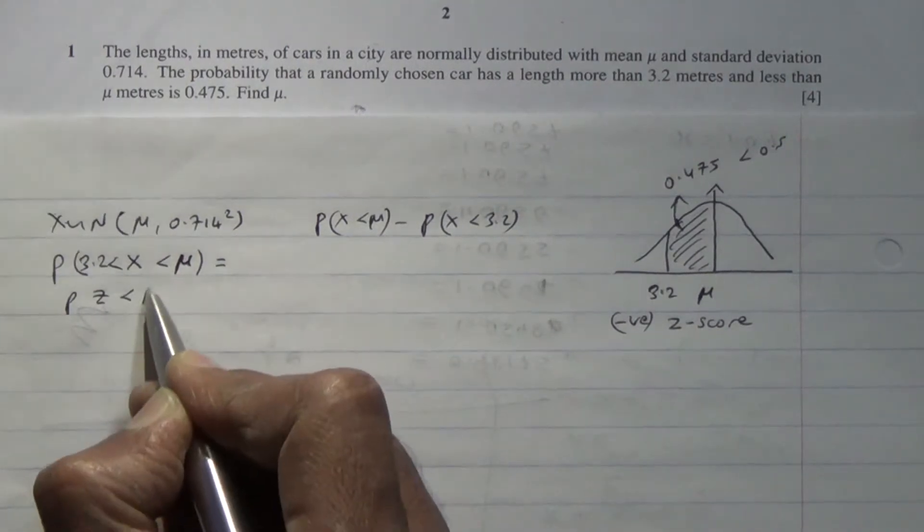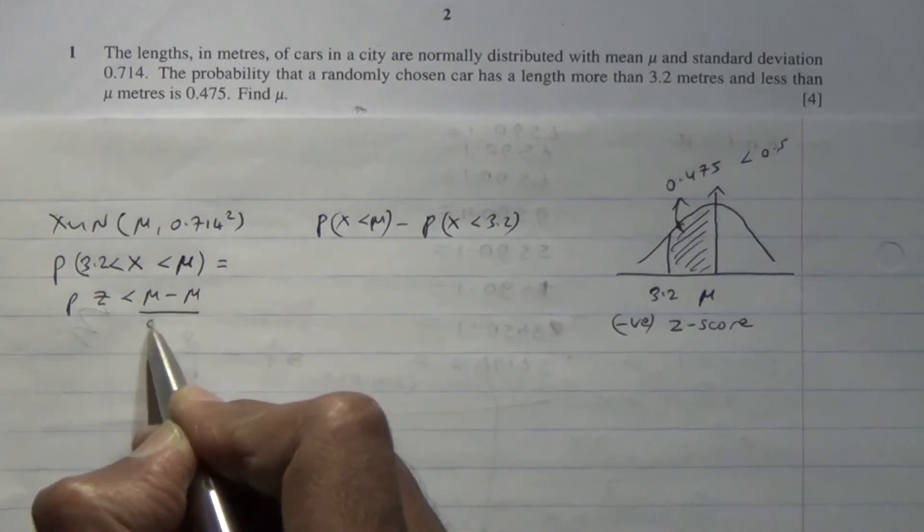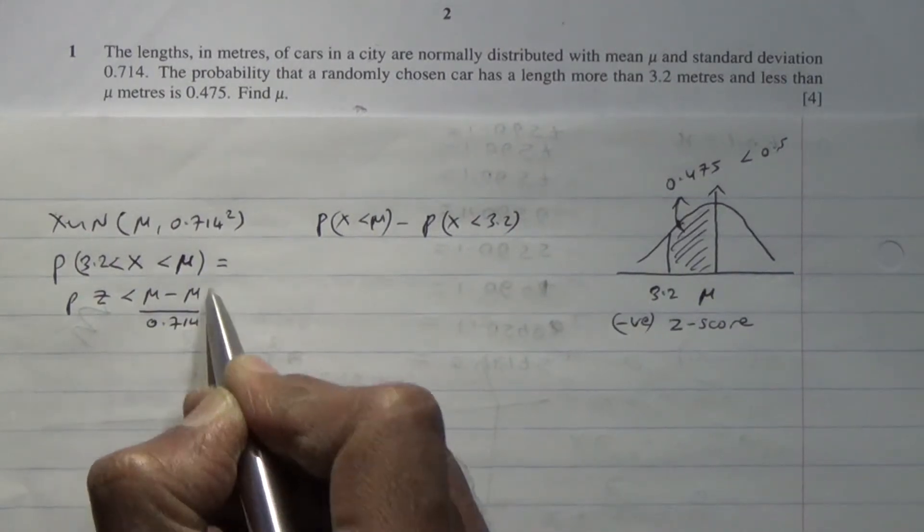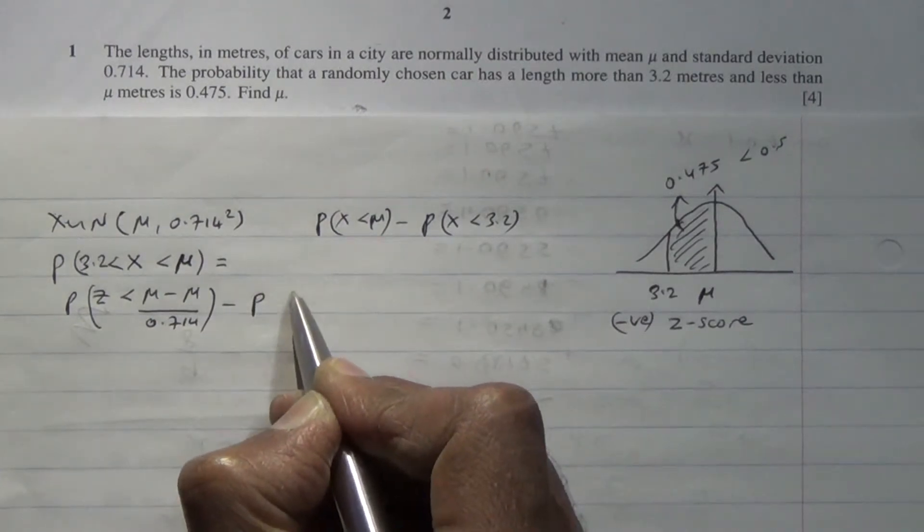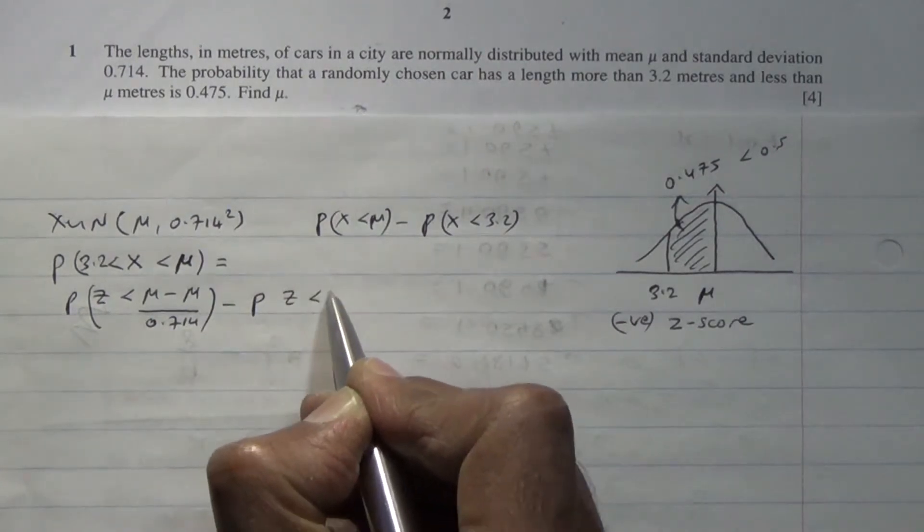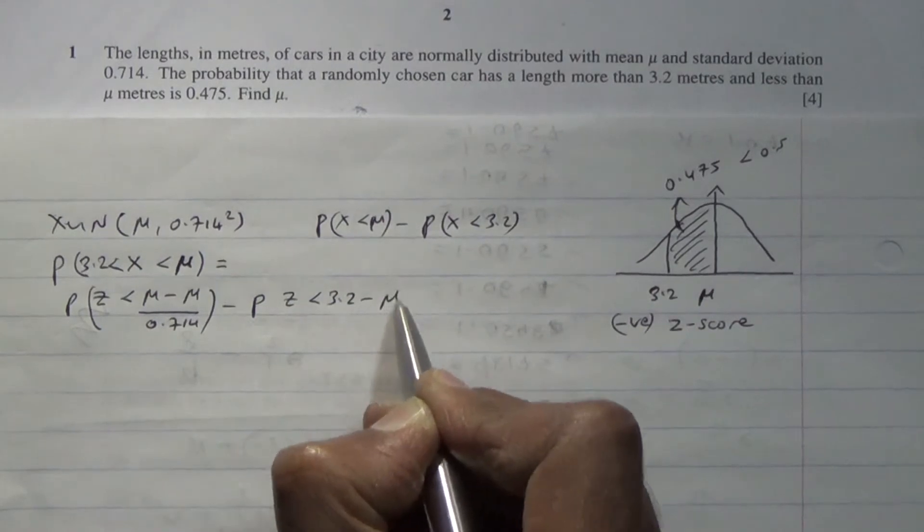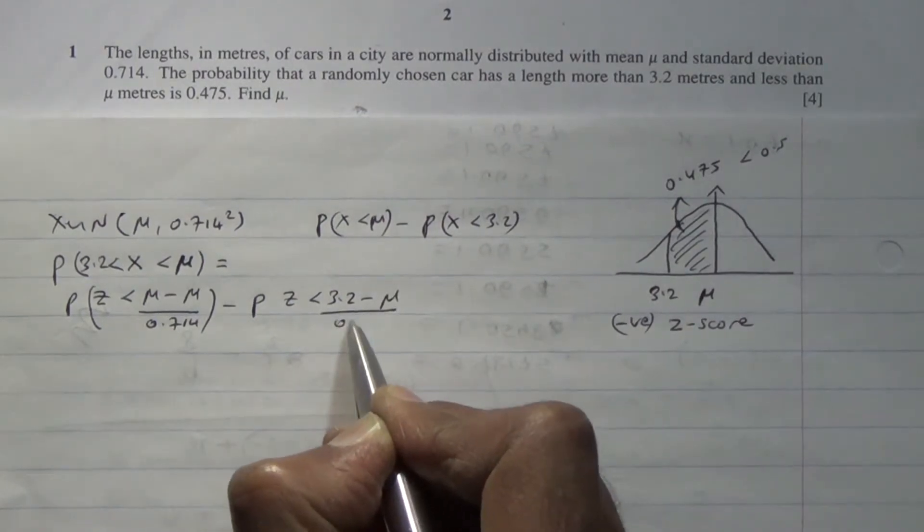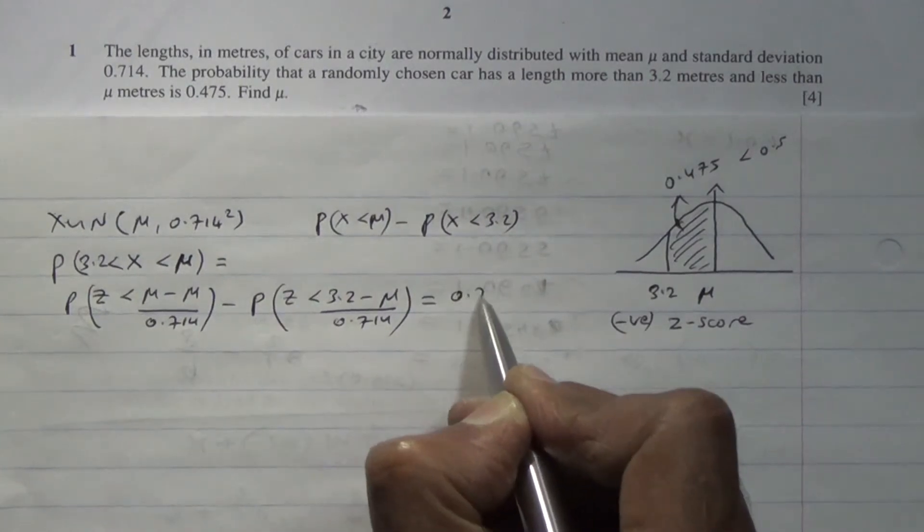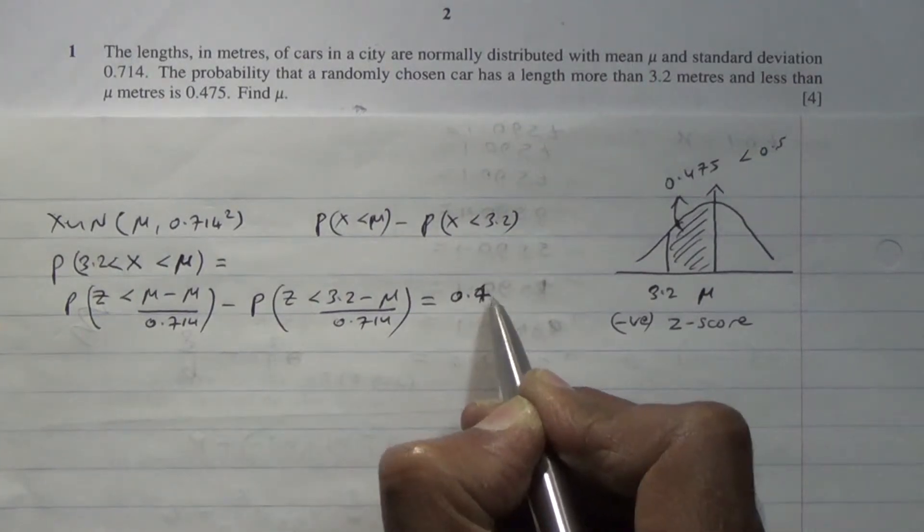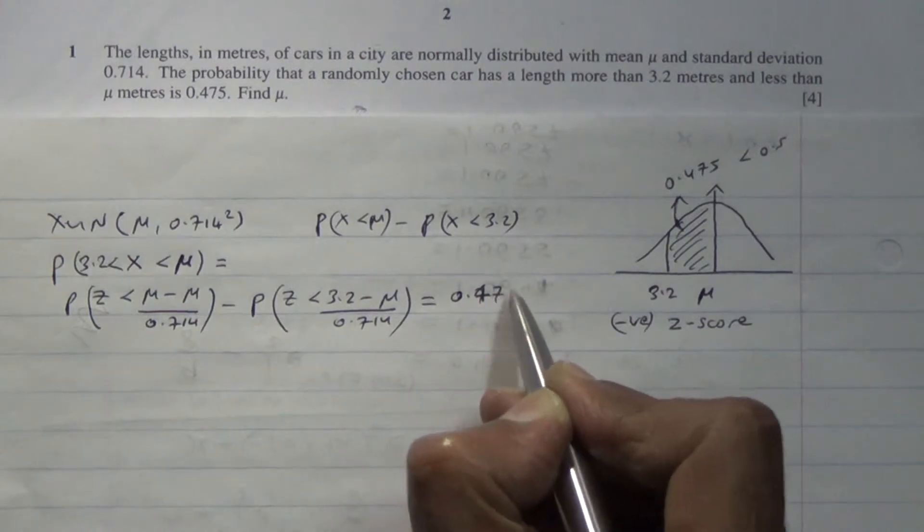Probability of z being less than mu minus the mean mu over the standard deviation 0.714, all of that minus the probability of z being less than 3.2 minus the mean mu over the standard deviation again. All of that is going to give us this area 0.475.